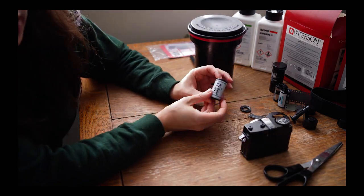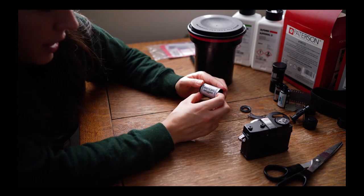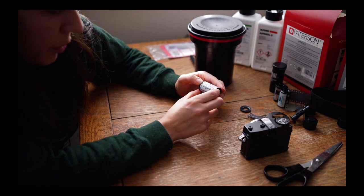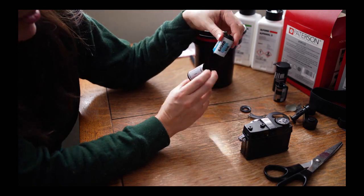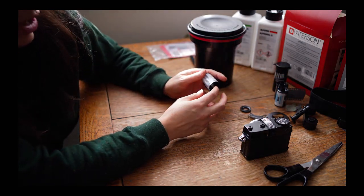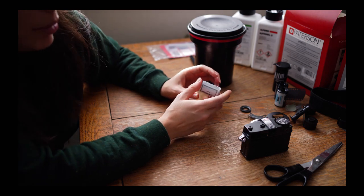And this is the film that I have in there. It's Arista Edu Ultra Black and White Film 400. And because my other rolls are different ISOs, I'm only just going to do this roll right now.